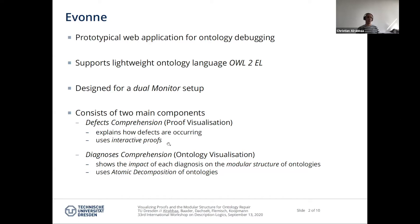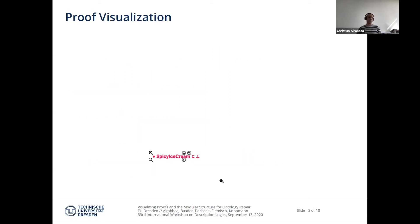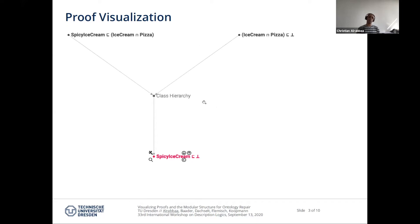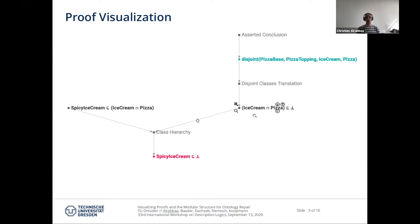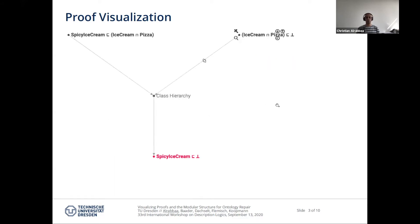Regarding proofs, I won't go into more detail since we've just heard about this in the previous two talks. In Devon, there are basically two modes of proof exploration. Either we start from the asserted axiom and go all the way to the final conclusion, or we start from the final conclusion and by pressing a button we can see the immediate inference step that led to it. Selecting any axiom of the proof will activate its corresponding buttons, and we can either show the entire sub-proof or sub-tree rooted in the currently selected axiom, or just hide it.